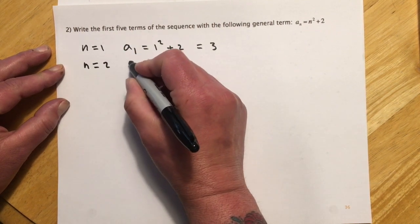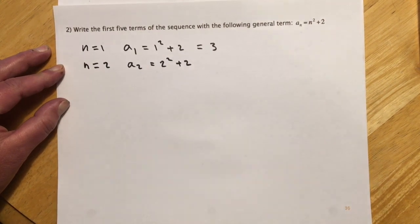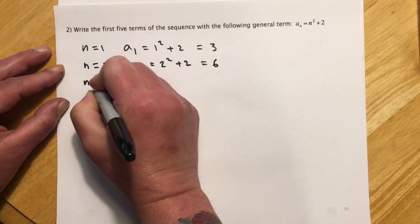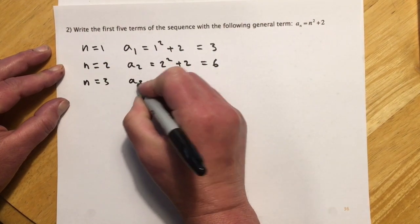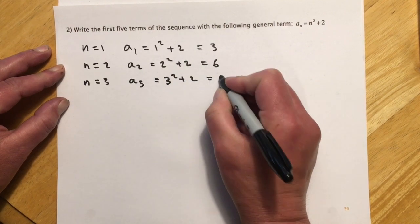n equals 2. So a sub 2 would equal 2 squared plus 2. So 4 plus 2 would be 6. n is 3. That's a sub 3. And that would be 3 squared plus 2, so that would be 11.